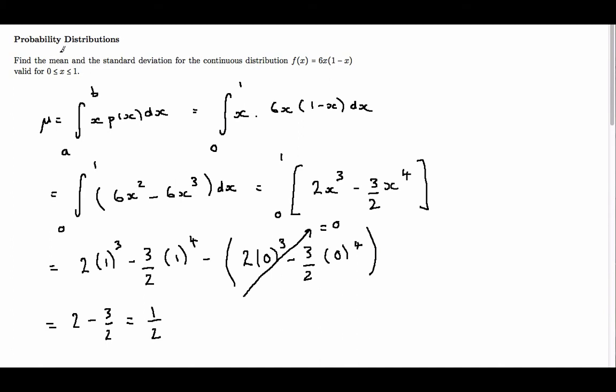So I'm just left with 2 minus 3 over 2 which is 1 half. So I can say that the mean is equal to 1 half.